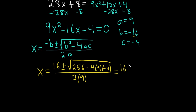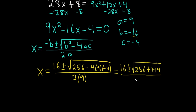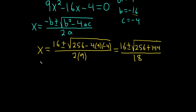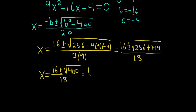So this equals 16 plus or minus the square root of 256 plus 144 — because 4 times 9 is 36, times 4 is 144 — all over 18. Continuing: 256 plus 144 is 400, all over 18. So it equals 16 plus or minus the square root of 400, which is 20, over 18.